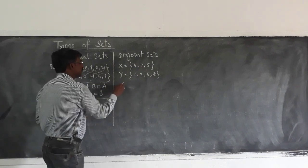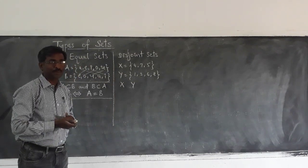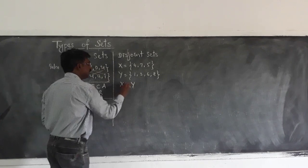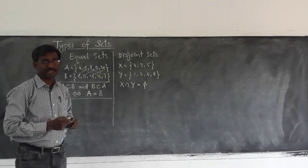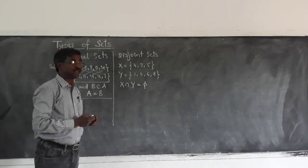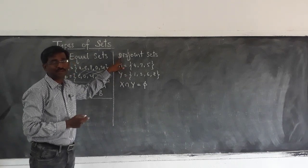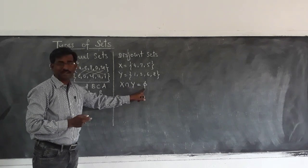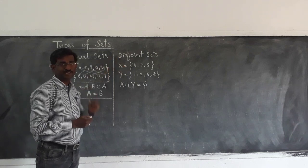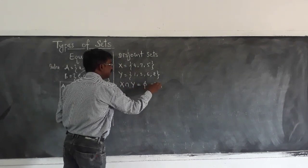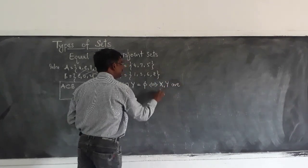There are no common elements between X and Y. That means the intersection is a null set. That is called a disjoint set — when the intersection of any two sets is a null set, the two sets are called disjoint sets. When intersection is φ, then X and Y are disjoint sets.